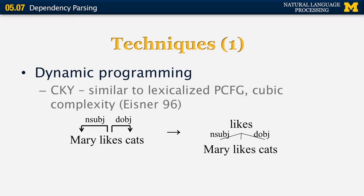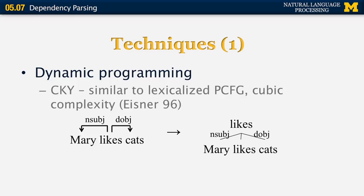Here are the main techniques for dependency parsing. The first type is based on dynamic programming, using methods similar to CKY with cubic complexity. There was a famous paper by Jason Eisner in CoLing 1996 explaining this. For example, the sentence 'Mary likes cats' has 'likes' as the predicate with 'Mary' and 'cats' as its two modifiers. We can build this tree using dynamic programming, propagating the head to the top of each production, mapping nsubj and direct object dependencies to parse tree labels.